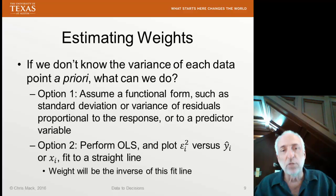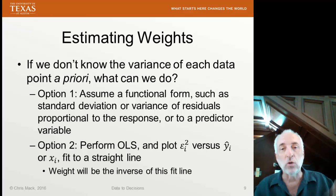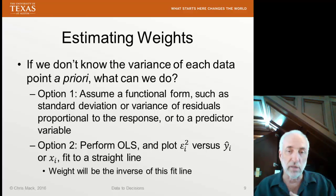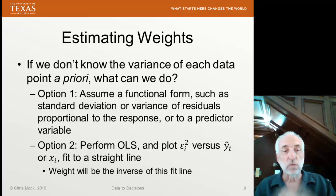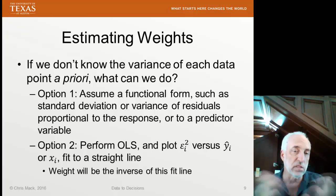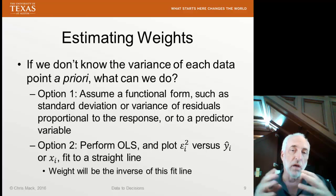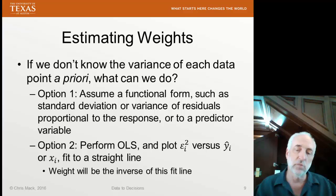The second option is to perform ordinary least squares regression and then look at how the variance varies. You can plot the residuals squared — the ESR squared in particular — versus the predicted values or versus x. Then you fit it to a function, the most common being just a straight line. That straight-line fit gives you the weights: essentially 1 over the straight-line fit y-value is the weight you apply to that data point. This is just an empirical way of using your data to come up with the weights, assuming variance is proportional to either the response or predictor variable.